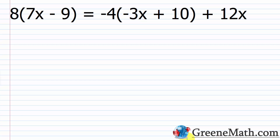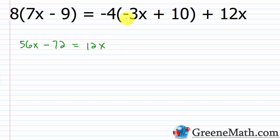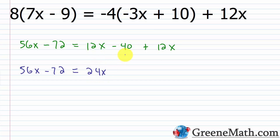Let's look at one more example. We have 8 multiplied by the quantity 7x minus 9 is equal to negative 4 times the quantity negative 3x plus 10, and then plus 12x. I want to simplify each side separately. So 8 times 7x is 56x, minus 8 times 9 is 72. On the right, negative 4 times negative 3x is 12x, and negative 4 times 10 is minus 40, plus 12x. On the left I can't simplify further: 56x minus 72. On the right, 12x plus 12x is 24x, minus 40.